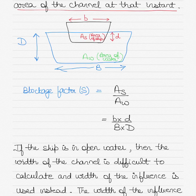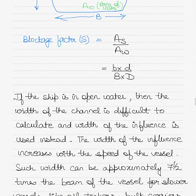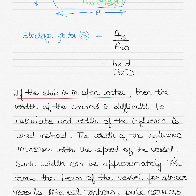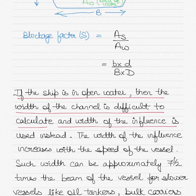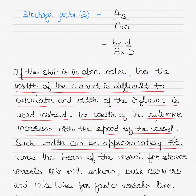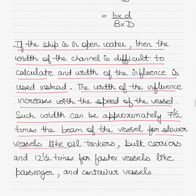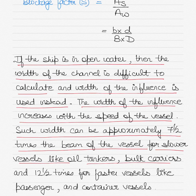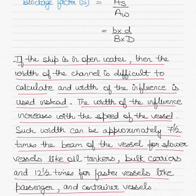The area is calculated by multiplying the breadth by depth. If the ship is in open water, the width of the channel is difficult to calculate and the width of influence is then used instead. The width of influence increases with the speed of the vessel — approximately seven and a half times the beam of the vessel for slower vessels like oil tankers and bulk carriers, and twelve and a half times for faster vessels like passenger and container vessels.